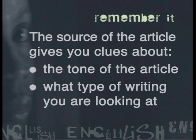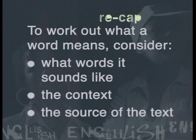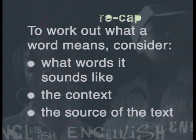The same technique of looking at the context can be applied to more complicated words you are unfamiliar with. Another thing to be aware of is to take note of the source of the text. The source of the article gives you clues as to the tone and type of writing, which is very helpful to determine the context. Before we try to work out the meanings of unfamiliar words, let's summarize what you should look out for: what the word sounds like, the context or surrounding words and ideas associated with it, and the source of the text.